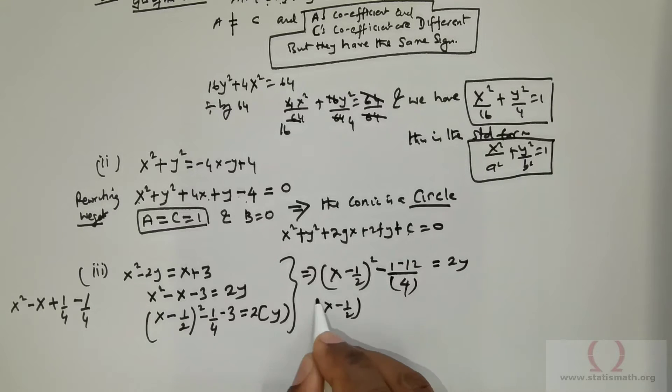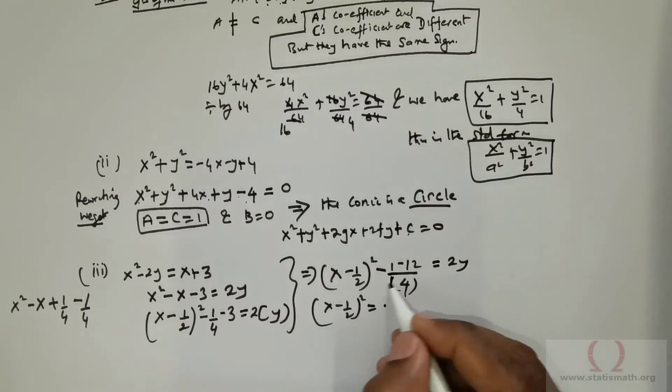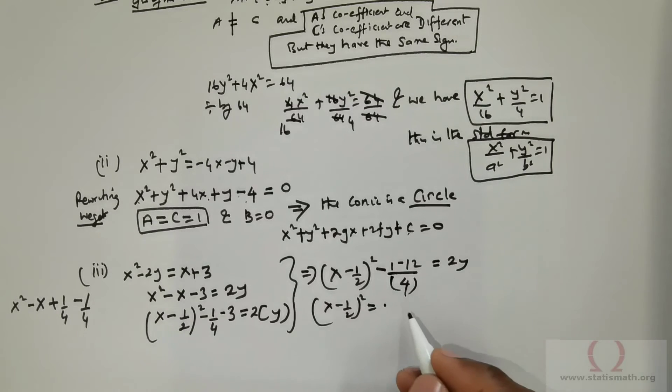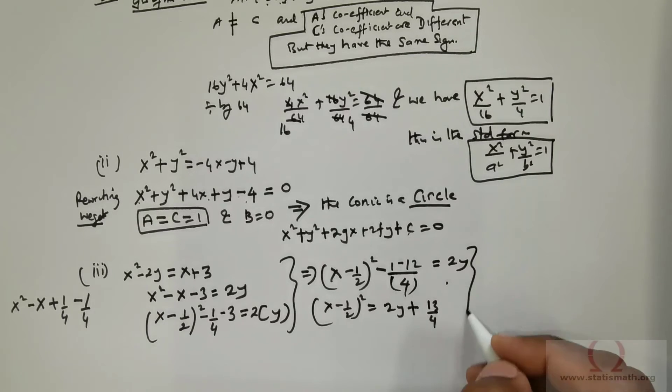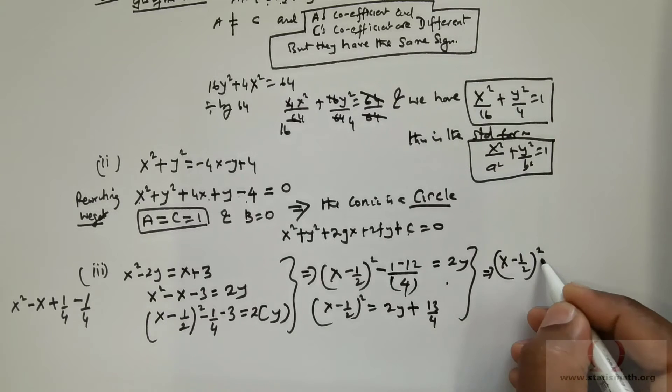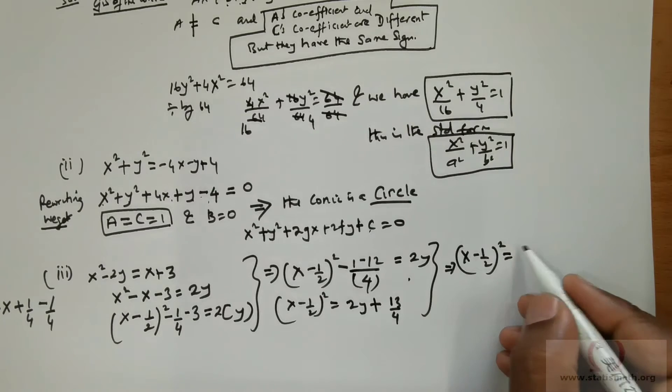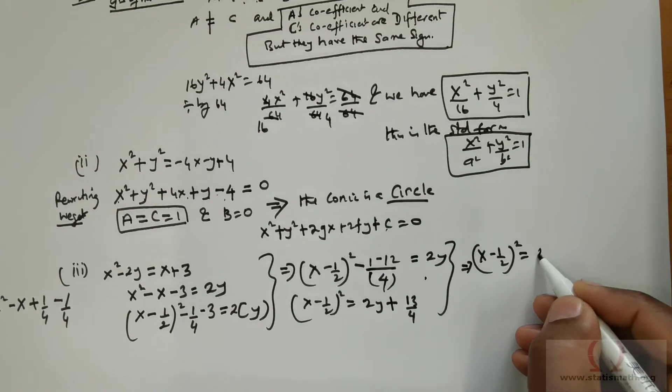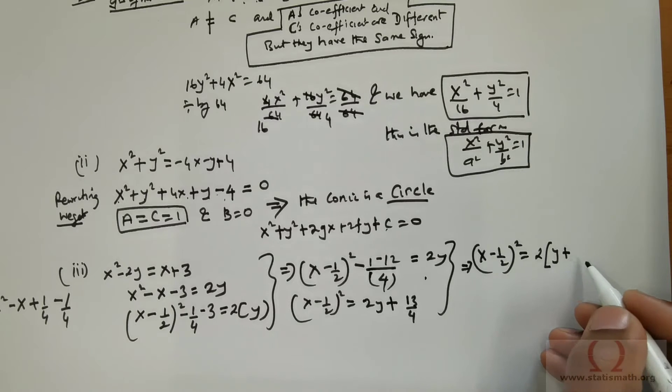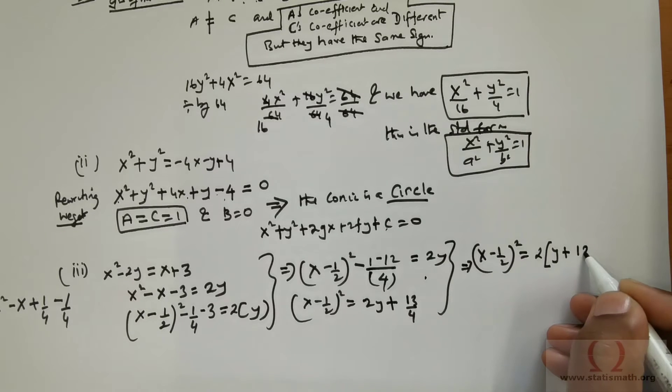x negative 1 over 2, all squared is equal to, in fact, this is going to give me negative 13 over 4. So I am going to rewrite that as positive 13 over 4, which I can suitably rewrite here. x negative 1 over 2, raised to the power 2, equals, if I were to take 2 out, then this is going to be 2 times y positive. I have taken 2 out. So I can rewrite this as 13 over 8.